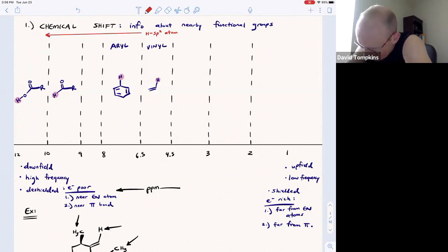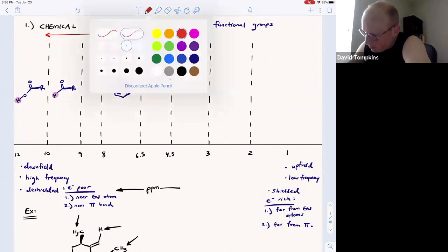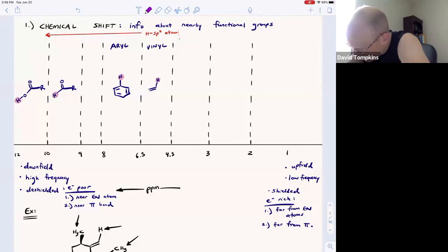There's this nice little dividing line around ppm of 4.5 or 5, where lower chemical shift values generally correspond to hydrogens that are connected to sp3 atoms. Those will be more upfield signals.